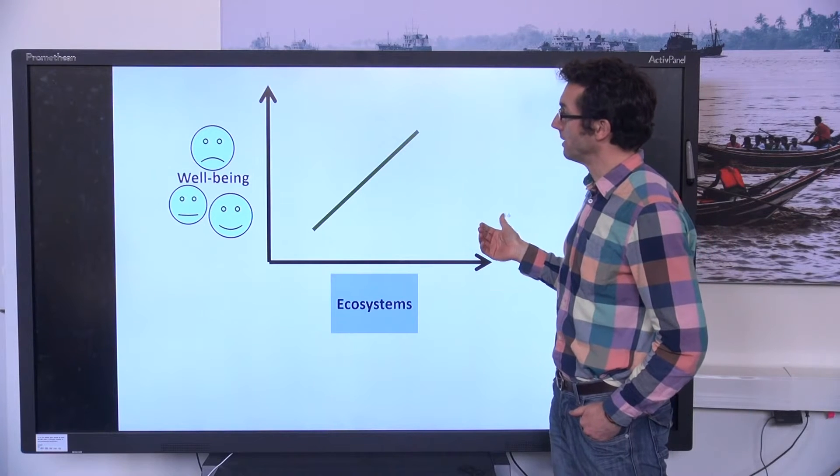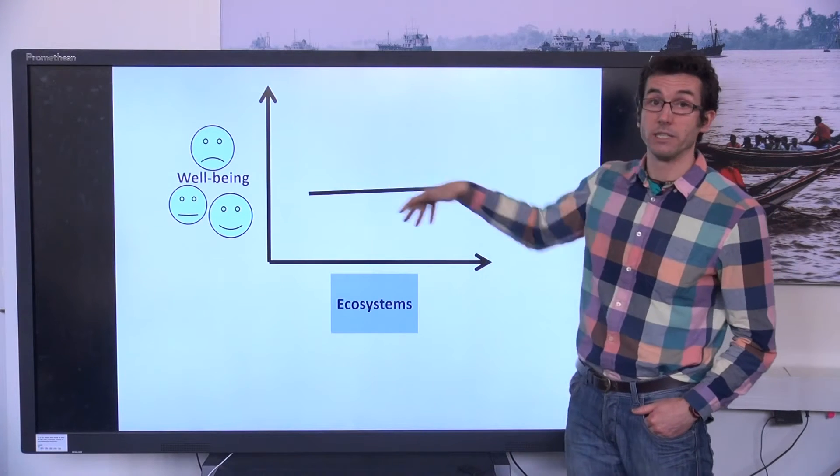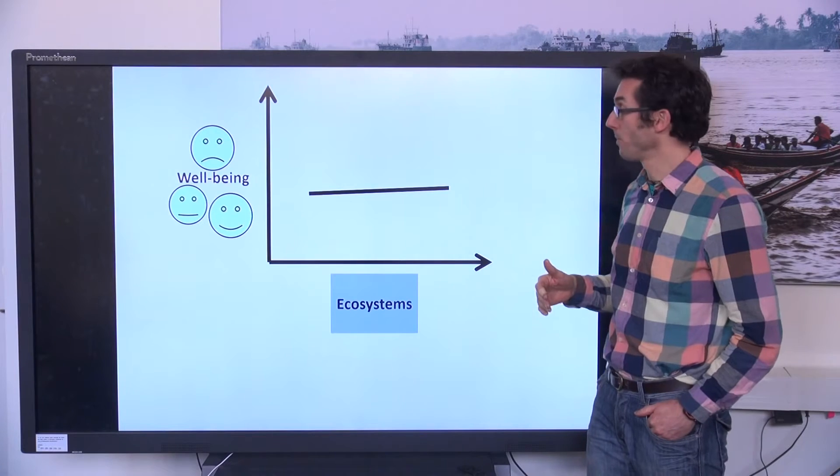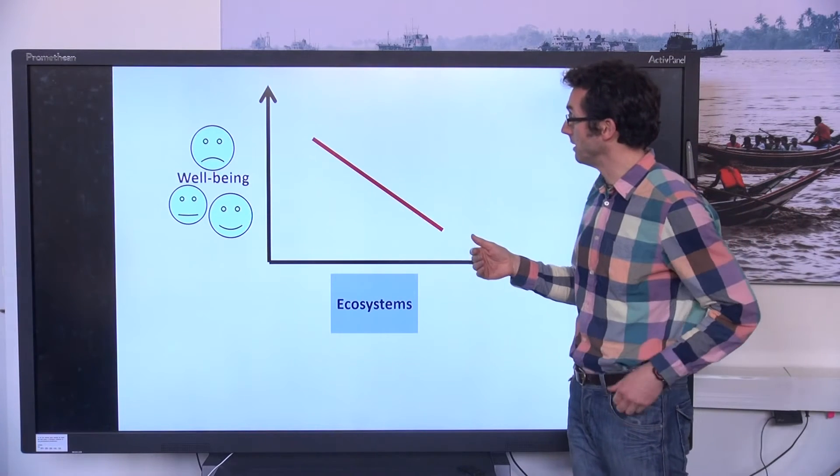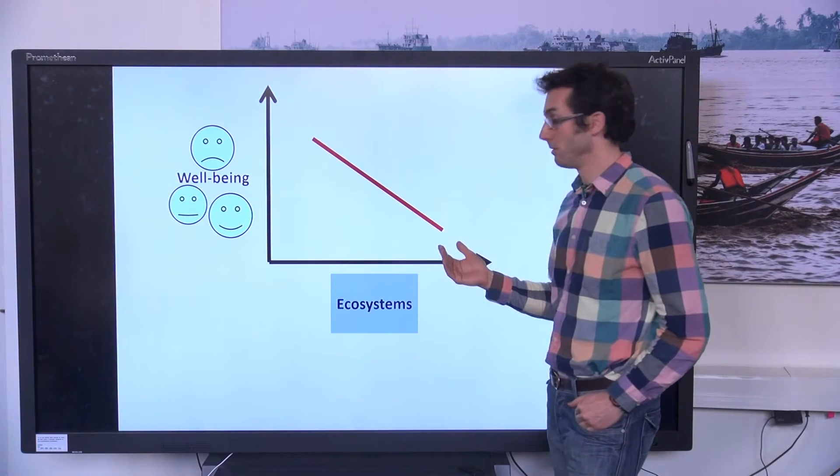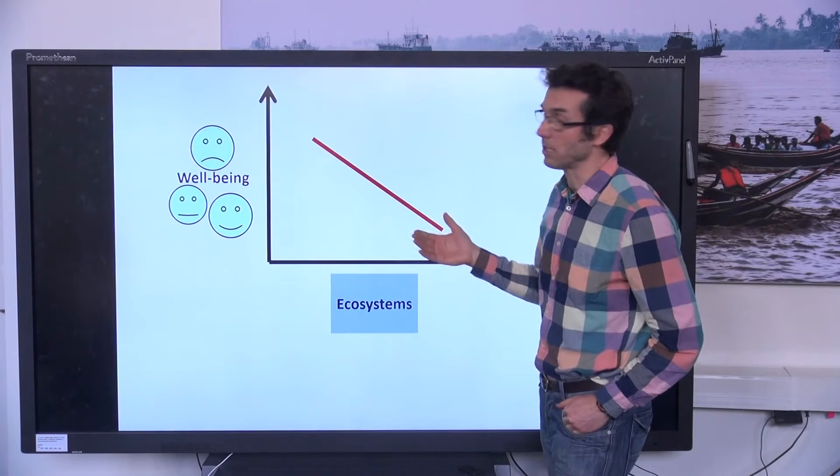But you can also have a low elasticity where people's well-being is not very sensitive to changes in ecosystems, or even a negative elasticity where ecosystems are enhanced and people's well-being declines.